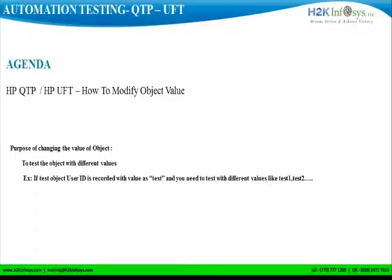All you need to do is just modify the value of the object and rerun the test. It's pretty simple compared to manual testing, where you would have to change the value and retest the application again. That's not the case with UFT. Let's see how to do it.